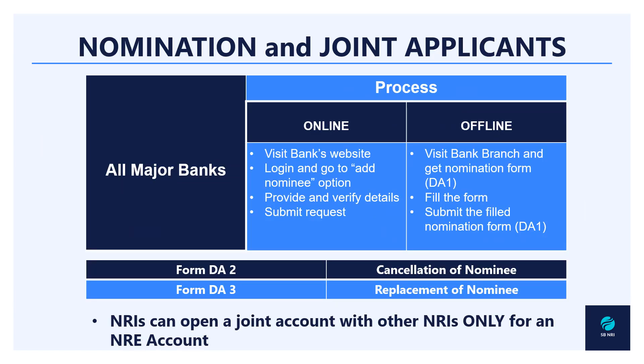Now coming to the next important topic: nomination and joint applicants. Under nomination, every major bank provides you with the facility to update your nominees. Having a nominee is very beneficial - it helps specifically with death claims. In case the account holder expires, it becomes easy for the settlement of the funds in the account and the balance is transferred to the nominee's account. That is the basic purpose of having a nominee - to make the entire process seamless and settlements easy.